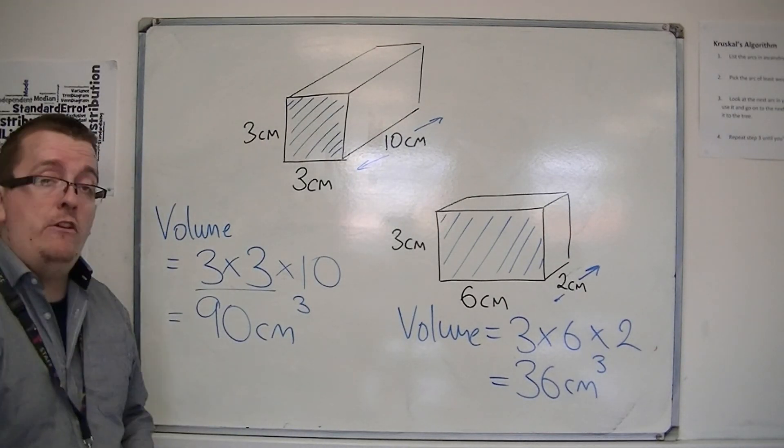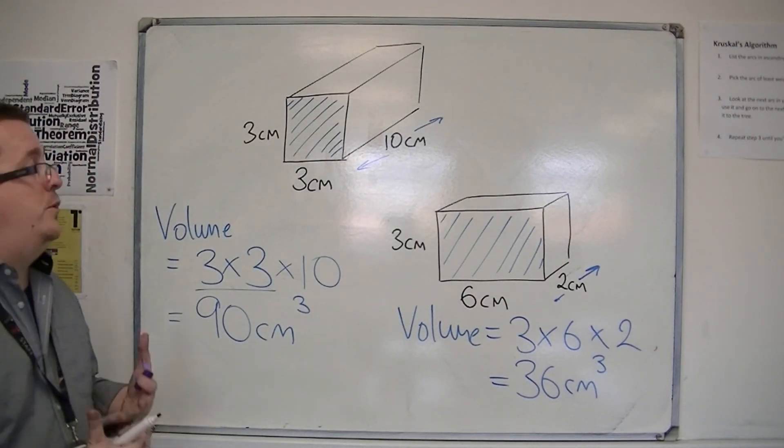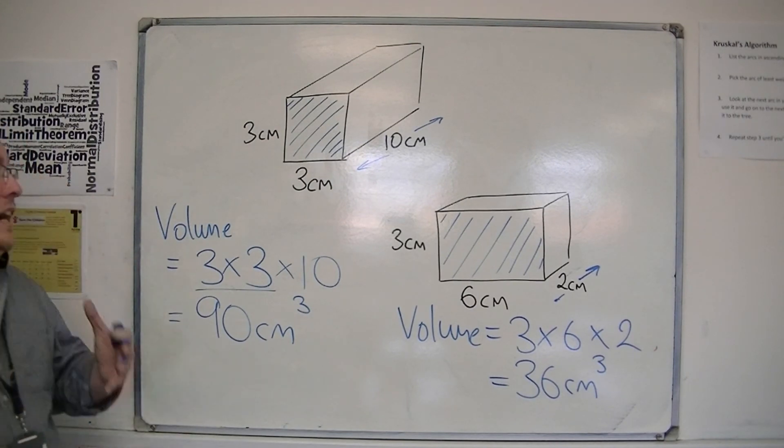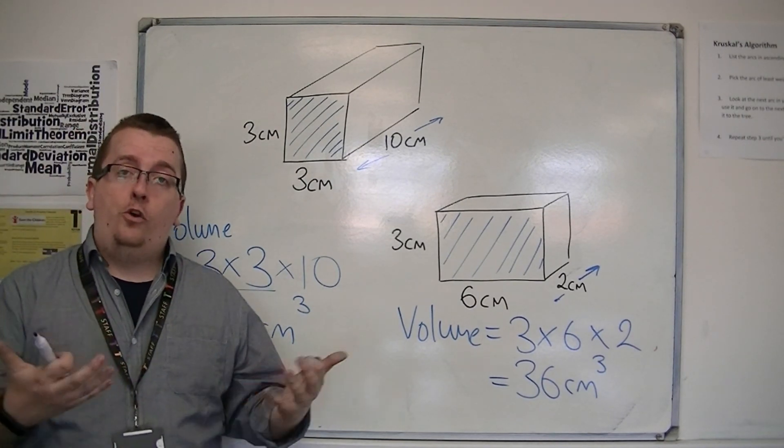OK? Not squared, because that was area, cubed, because we're dealing with volume. And that is how we work out the volume of cuboids.